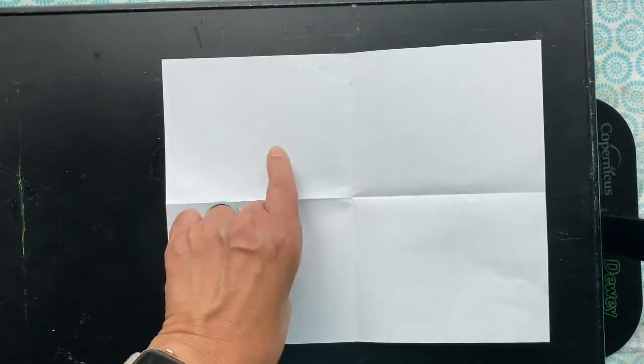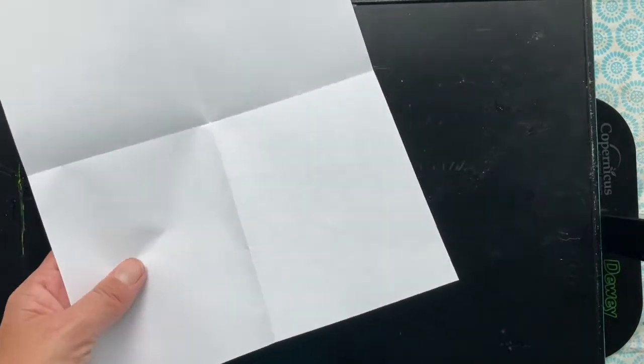Now the next step is you're going to take one of your papers that you folded and you're going to cut along the crease so that you are cutting out just one rectangle from your paper. So you're just going to go ahead and cut that out.